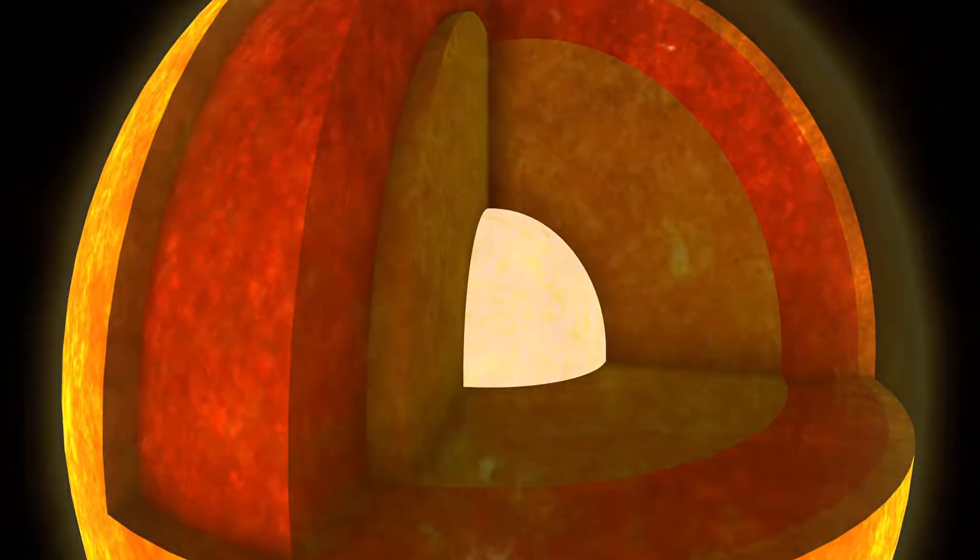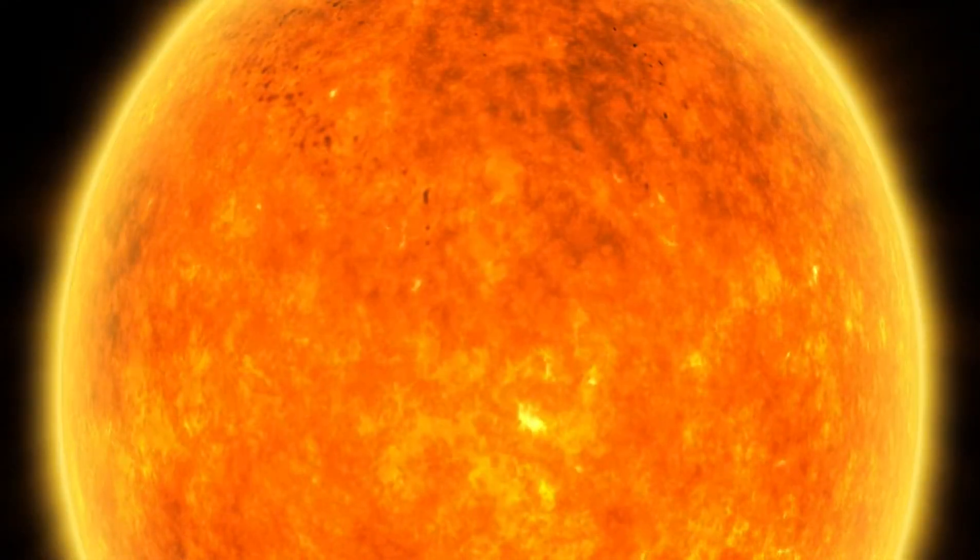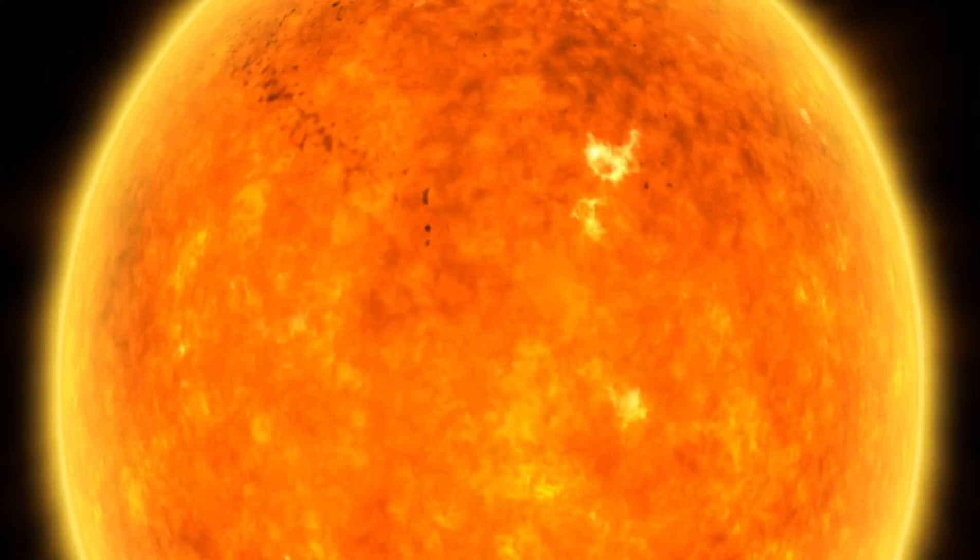While photons produced inside the dense sun take up to a million years to reach the surface, neutrinos fly out in two seconds and reach the Earth in just eight minutes.